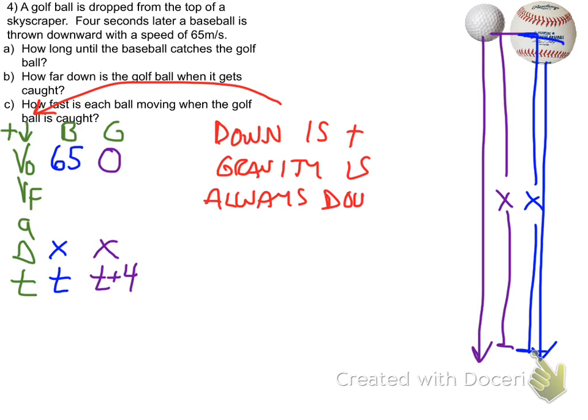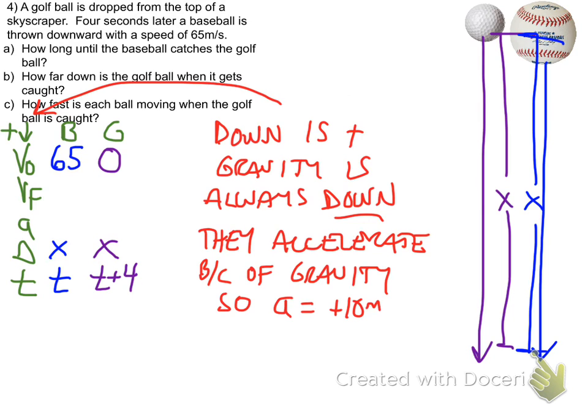Remember, down is positive and gravity is always down. Then the acceleration because of gravity. So the acceleration is positive 10 because we call down positive. So that's in there for the baseball and also for the golf ball.